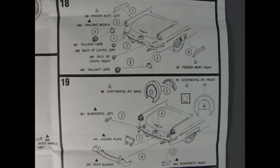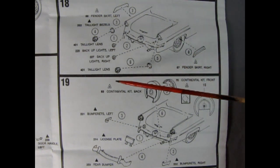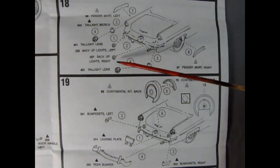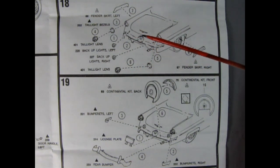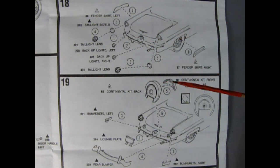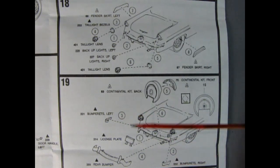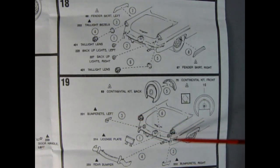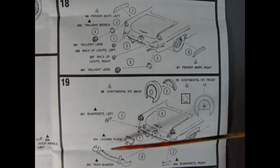Panels 18 and 19 show our assembly of the back end of the car. So here we've got our fender skirts being glued in place. We've got tail light bezels, red tail light lenses. We've got clear backup lenses which pop into there. And then panel 19 shows our continental kit going together. That's two pieces. It also tells you where the decal goes on there. And then we've got left and right hand side bumperettes which glue onto the body and then a license plate which hooks in and a rear bumper.